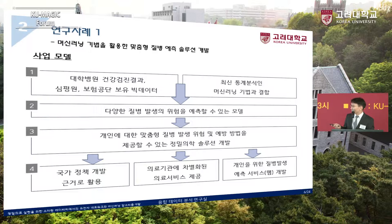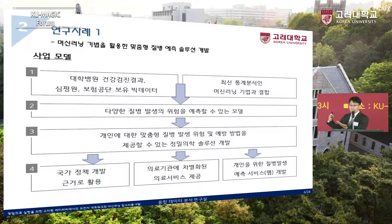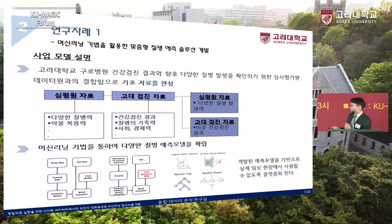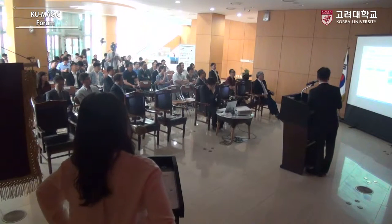대학병원의 건강검진 결과와 심평원 보험공단의 보유 빅데이터, 그리고 최신 통계기법인 머신러닝 기법을 결합해서 질병 발생에 대한 위험을 예측할 수 있는 모델을 만드는 것입니다. 보험공단 데이터에는 국민들의 건강검진 기록이 있고, 과거 히스토리를 모니터링해서 어떤 요소들이 변해서 병이 발생했는지 찾아보는 연구입니다. 심평원 자료와 구로병원 자료를 갖고 예측 모델을 확립해 보자는 연구를 하고 있습니다.